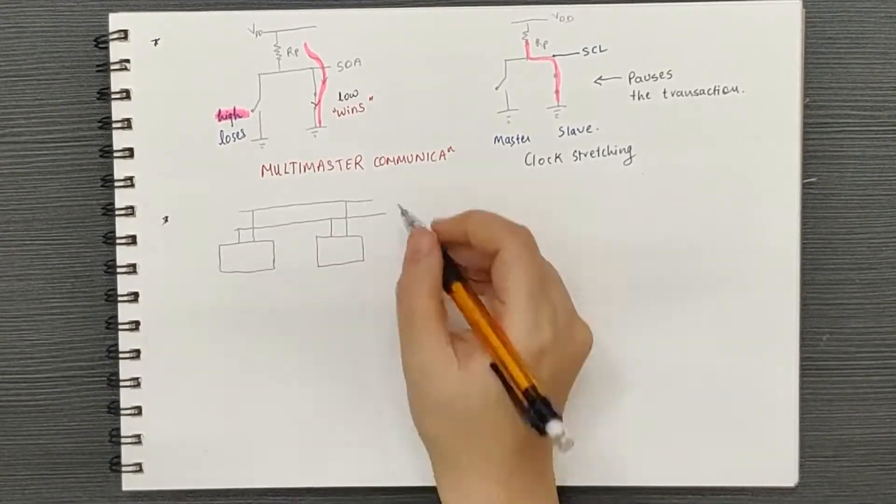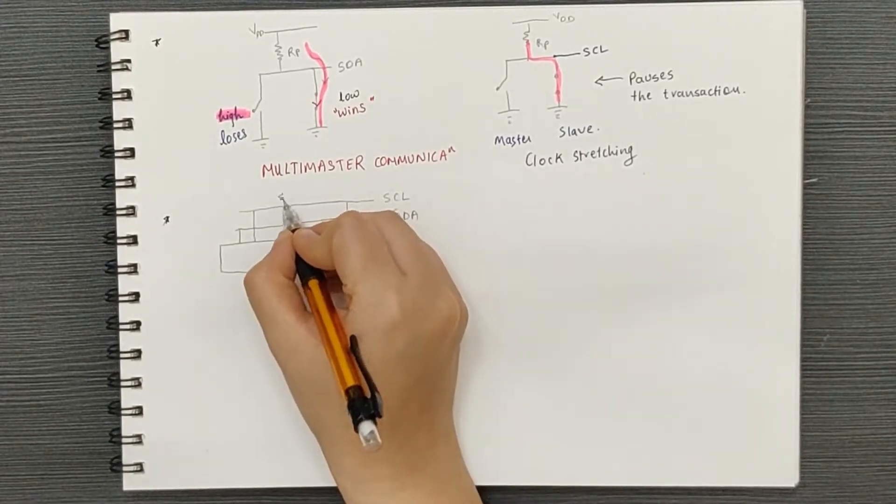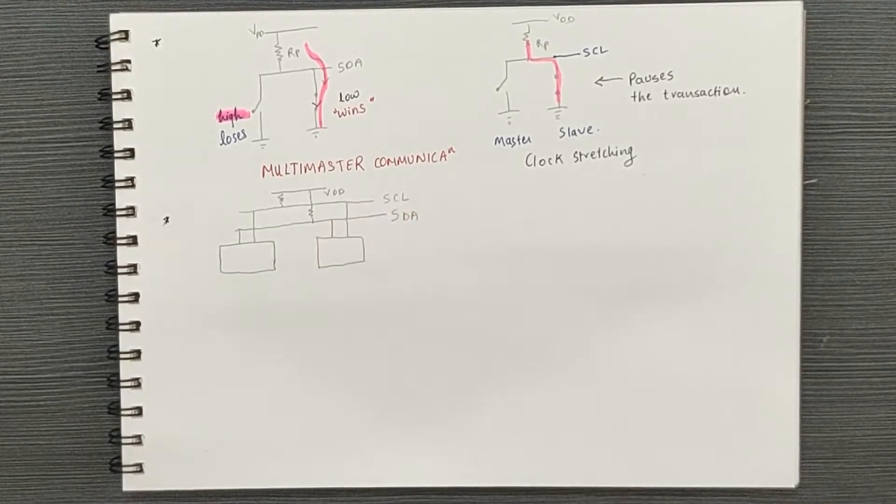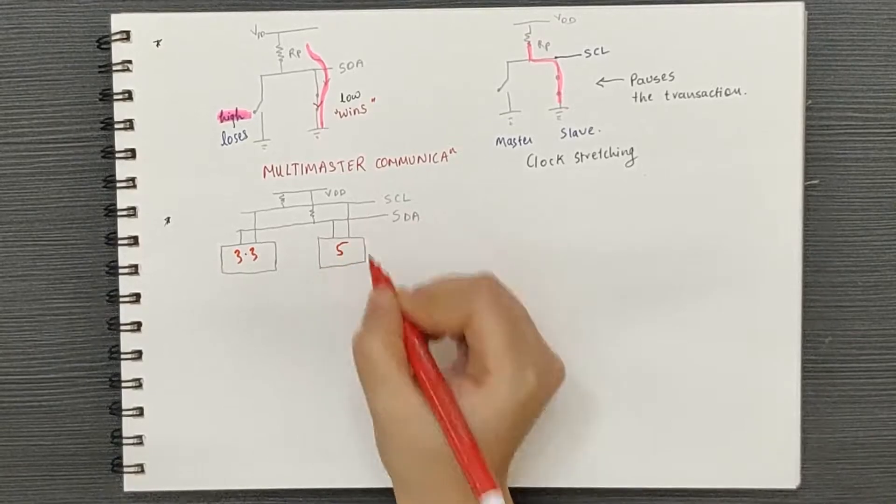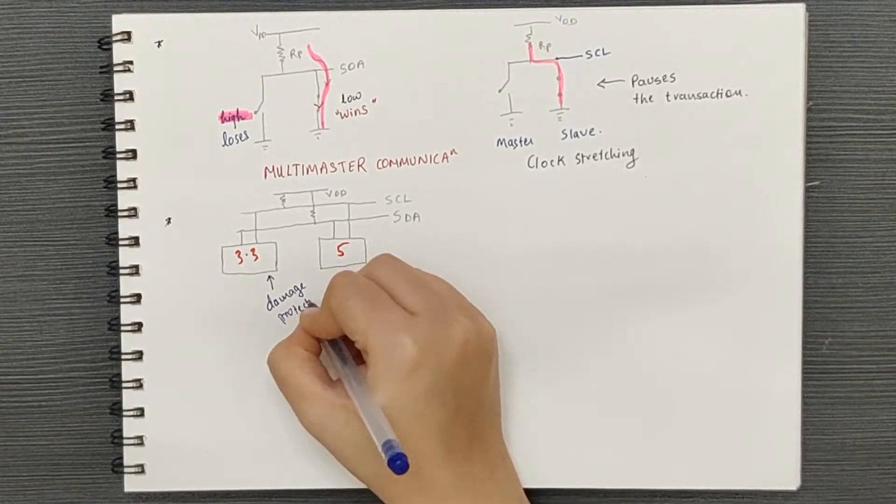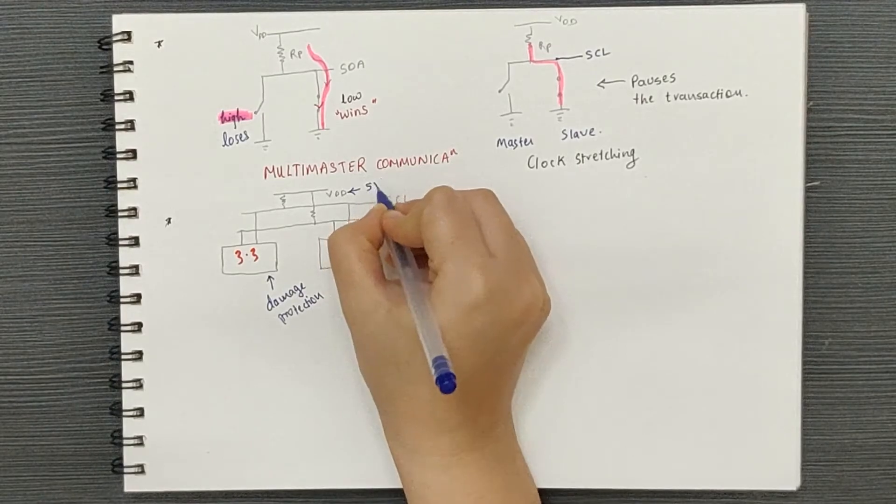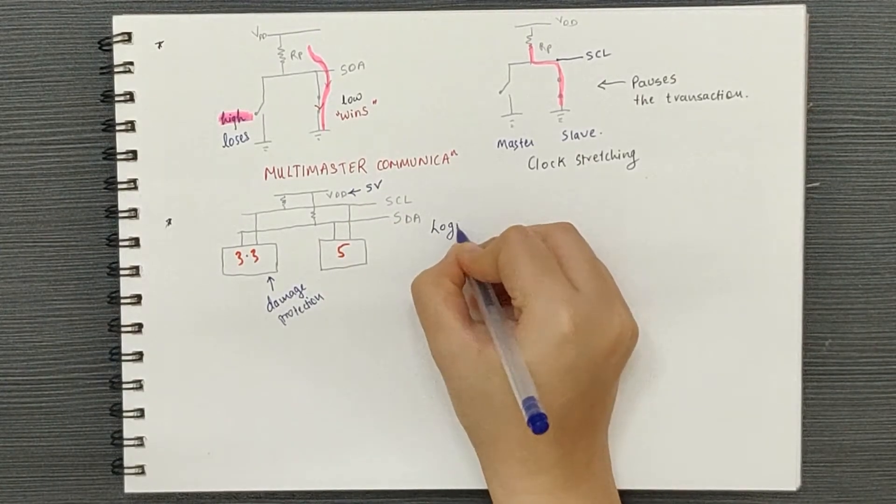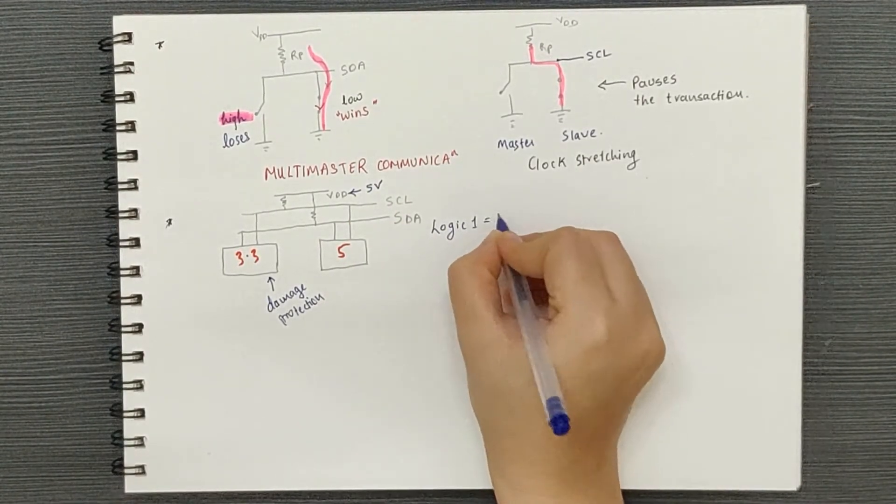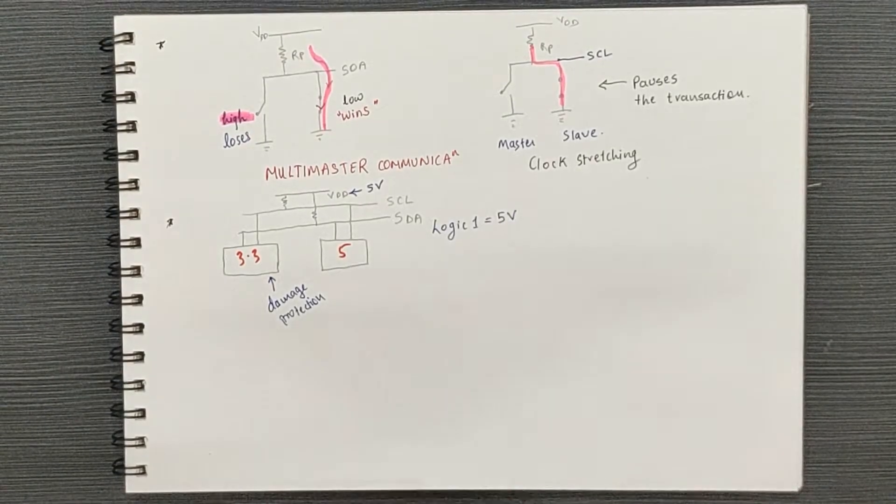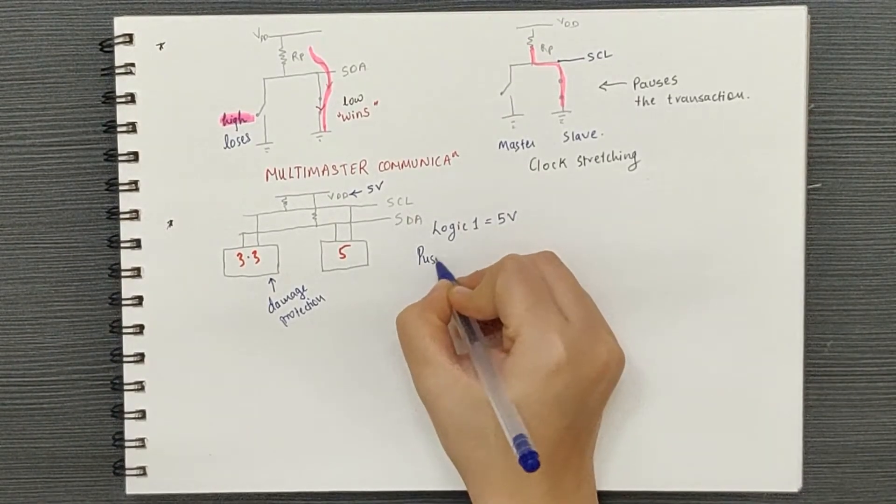devices with different supply voltages can co-exist on the same bus provided that the lower voltage devices have damage protection from higher voltages. For example, a 5V device and a 3.3V device can be connected on the same line with both SDA and SCL pulled to 5V.